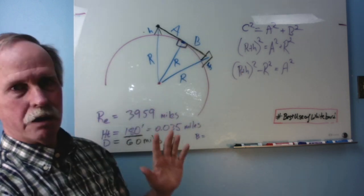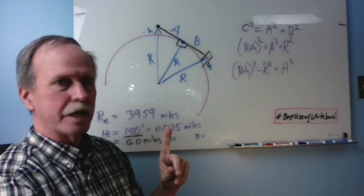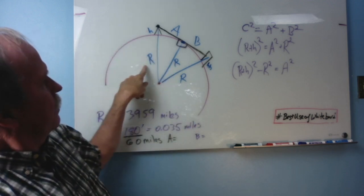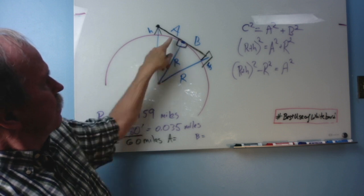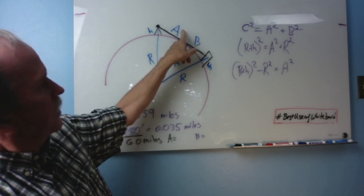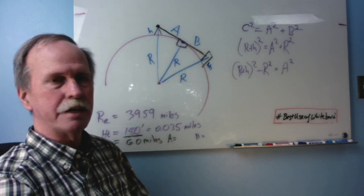So we've got radius plus height squared equals the distance from our observation to the horizon squared and the radius squared. Now we know all of these values with one exception. We know the height. We know the radius of the earth. But we do not know this distance A. So let's see if we can solve for A.